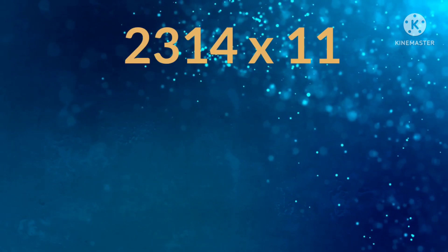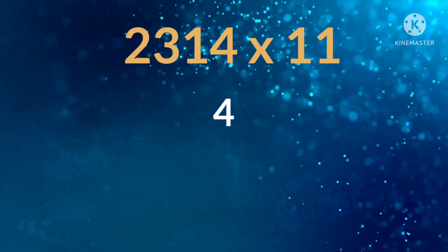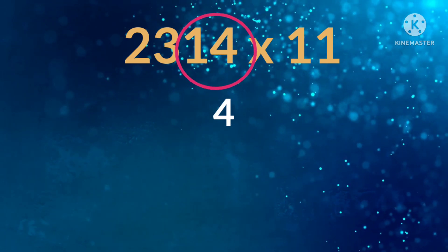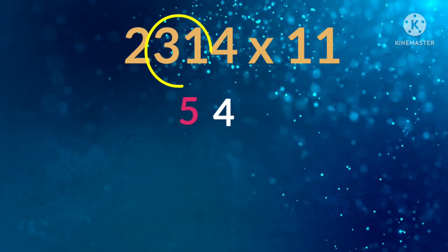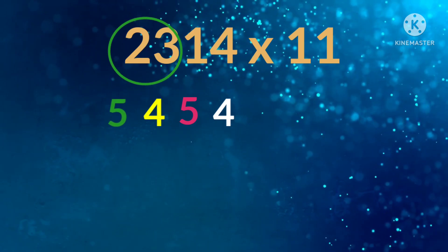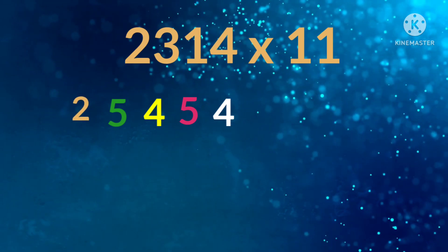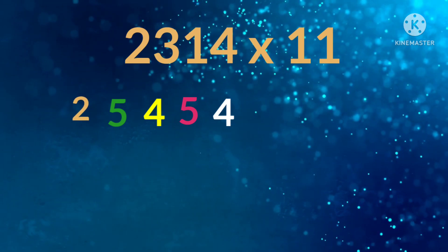Let's see one more: 2314 into 11. Unit digit 4. 1 plus 4 is 5. 3 plus 1 is 4. 2 plus 3 is 5. Then write the first digit as it is. Answer is 25454.